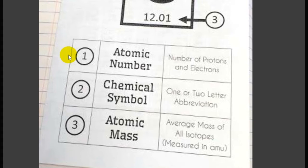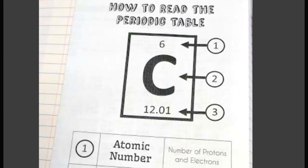In the block of an element, first we have is the element atomic number. This number will always be a whole number and is usually located at the top of the block.